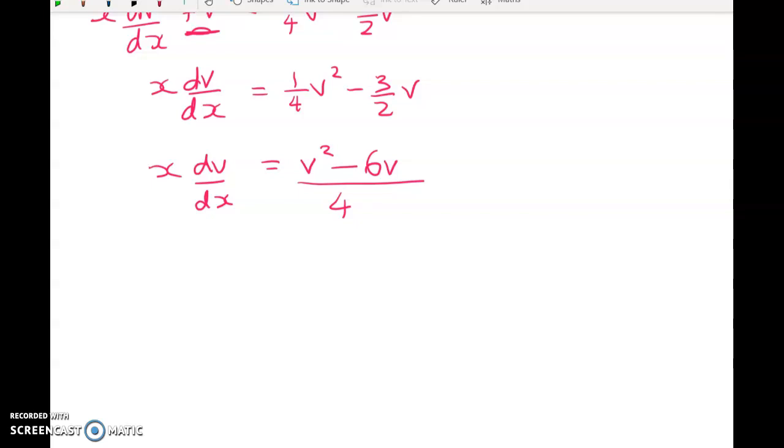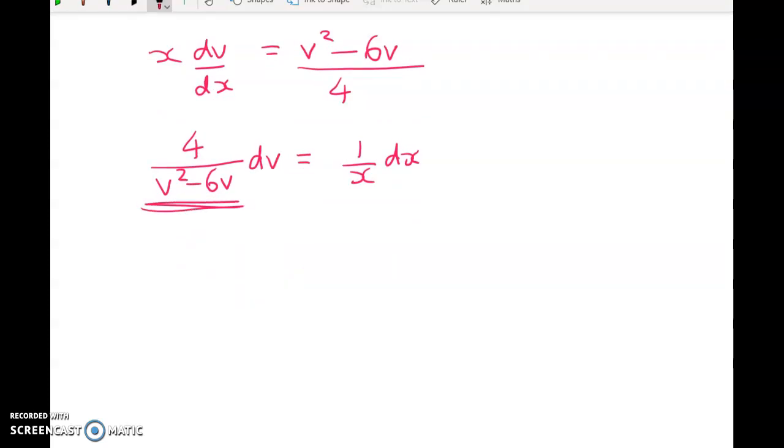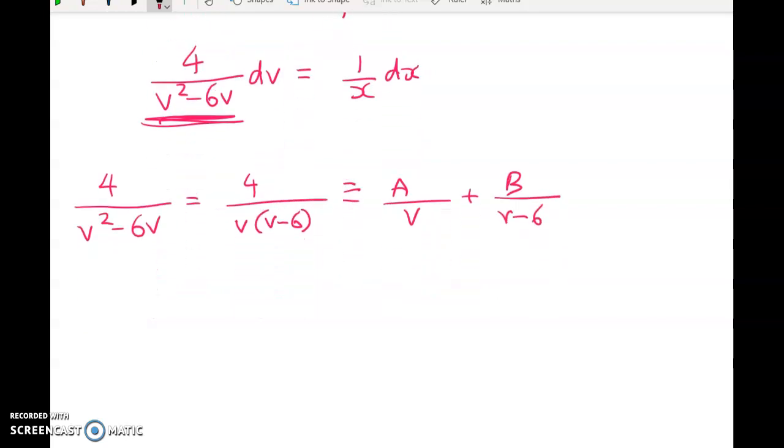Okay, so where are we? Well, we've got 4 over V squared minus 6V DV is equal to 1 over X DX. We're going to do partial fractions on this. So let's do this now. So 4 over V squared minus 6V is equal to 4 over V times V minus 6. And that's equal to some constant over V plus some other constant over V minus 6. So we have to figure out what those constants are.